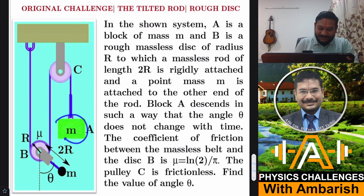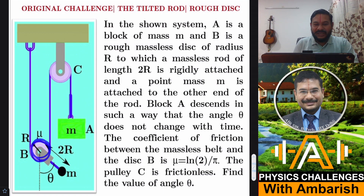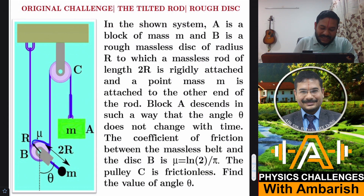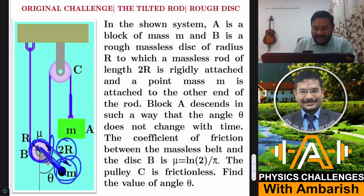What's happening here? This green one is a block of mass M. And this is a disk — please bear in mind, this is not a pulley. This is a disk and it is a rough disk. So what will happen: A will go down and this thread will slip over this disk. There's a rod attached to this disk of length 2R. The rod is massless, the disk is massless but it is rough. And there is a point mass M attached at the endpoint of the rod.